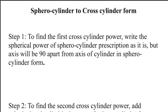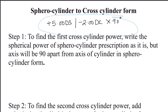Now we'll go through the steps to convert sphero-cylinder to cross-cylinder form. Suppose you have been given a prescription which is plus 5 diopter spherical with minus 2 diopter cylinder at 90 degrees. Step one is to find the first cross cylinder. To find the first cross cylinder power, write the spherical power of the sphero-cylinder prescription, but the axis will be 90 degrees apart from the cylindrical axis of the sphero-cylinder.